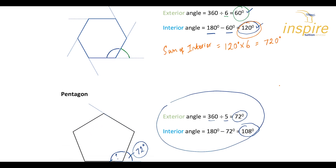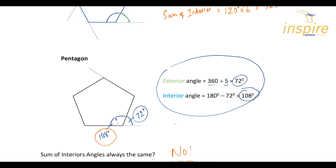And for the pentagon, the sum of interior angles is 108 times five, which equals 540 degrees. Hopefully that's enough information for you to be able to answer any particular questions you need to in your 11-plus. Thanks for watching.